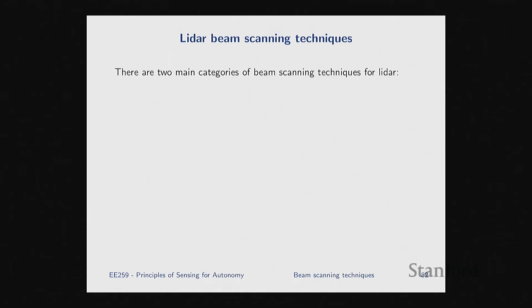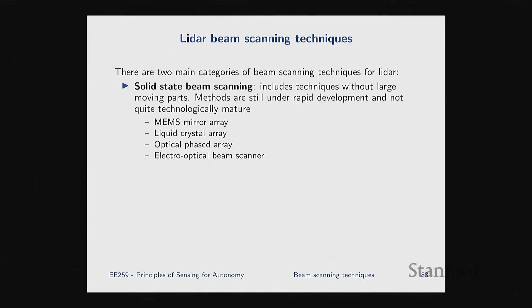There are two main categories of beam scanning. Solid-state beam scanners have no large moving mechanical parts — these include MEMS mirror arrays, liquid crystal arrays, optical phase arrays, and electro-optical beam scanners. They're attractive for compactness, low power, and robustness. However, as of today, most of these technologies are not mature enough for widespread field deployment, especially in automotive applications.